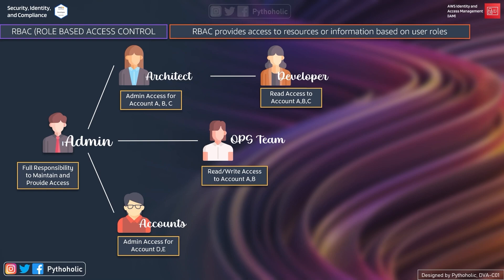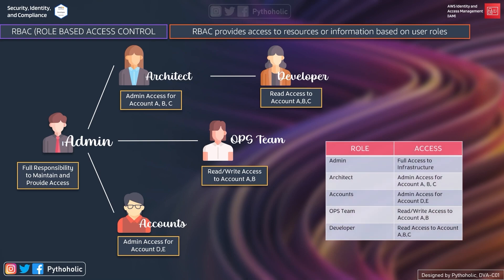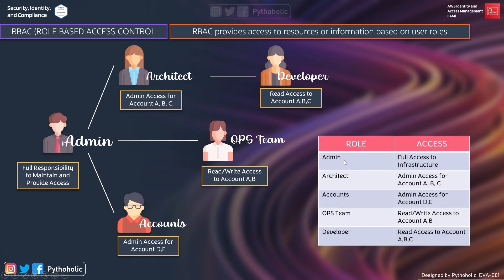This is what role-based access looks like. These are the roles: admin role, architect role, accounts role, ops team, and developers. Based on that, they have been provided access to these accounts, and the type of access is also defined based on the role that they have.